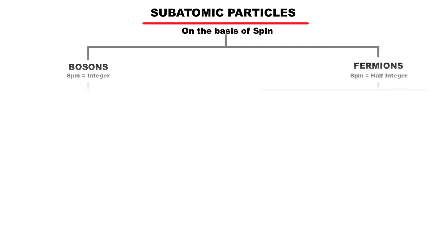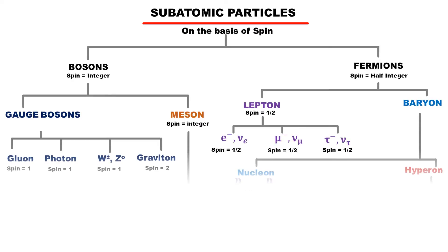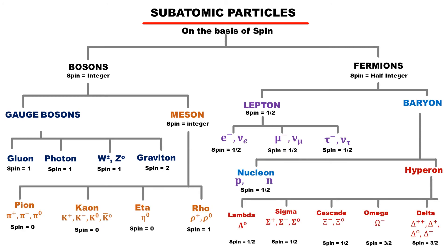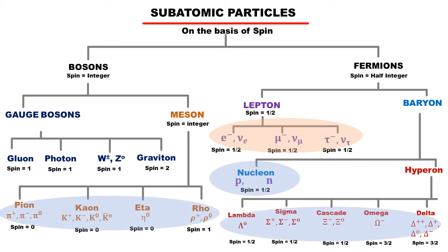In the classification of subatomic particles, we classified particles on the basis of their spin. Of these, only leptons are elementary subatomic particles — they are not made of any other particles. Mesons and baryons are commonly called hadrons. All these hadrons are not elementary particles; rather, they are made of other elementary particles called quarks.